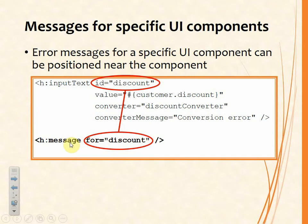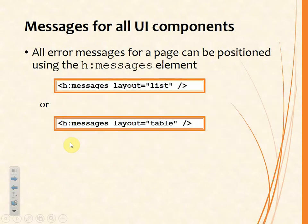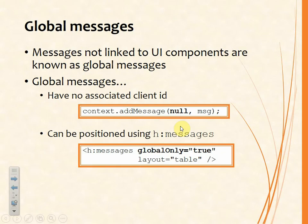It might be that one conversion failed or that several conversions failed. When that is redisplayed as part of the error processing in the lifecycle, when the H:message element is due to be displayed, the system will look for any messages that have the 'discount' ID associated and display them at that point. On the other hand, we might want to display all the messages at once, in which case we can use the H:messages element and set a layout attribute to either 'list', which gives a bullet-pointed list, or 'table'. Any message not linked to a specific UI component via its ID is known as a global message — we set the ID to null instead of a particular component ID.